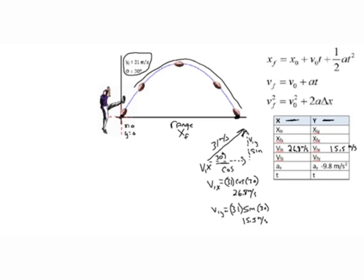Notice the football is being kicked in this direction. To find my components, I start at the beginning of the resultant vector and draw in my components — one going to the right and one going up. I have to make sure my signs are correct. The x vector is going to the right, so it's positive x. The y vector is also positive. Both components are in the positive directions, and this is very important when dealing with vectors.